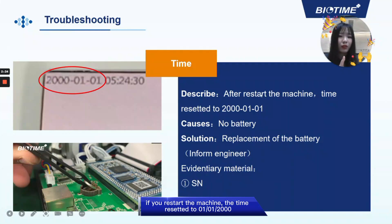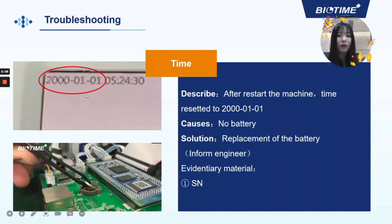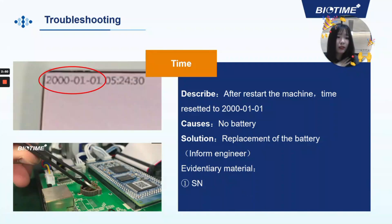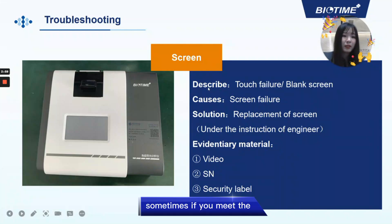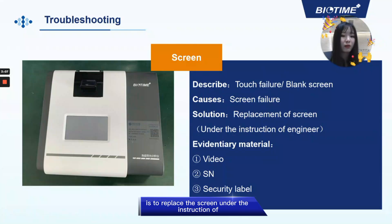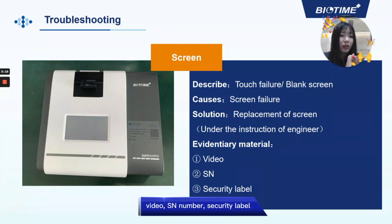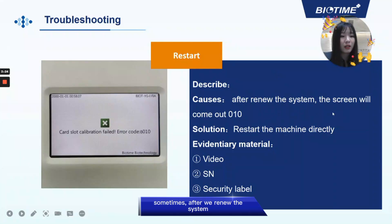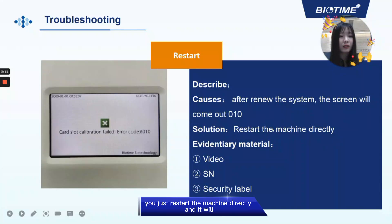If you restart the machine and the time resets to January 2000, it means the battery is dead. The only solution is to replace the battery — please inform the engineer. The only item you need to provide is the asset number. If you encounter a black screen or touch issue, the only solution is to replace the screen under engineer instruction. Provide a video, asset number, and security label. Sometimes after updating the system, the screen may show error code 0-1-10 — that doesn't matter, just restart the machine directly and it will run properly.